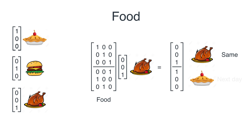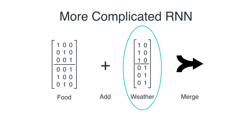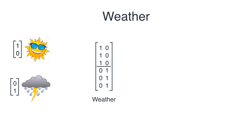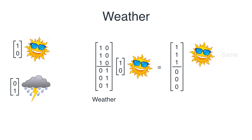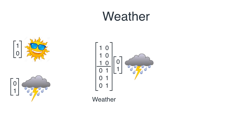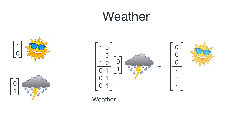So all the food matrix does is take your vector for today's food and return the vector for today's food and the vector for tomorrow's food, concatenated. Now let's look at the weather matrix. It's also a concatenation of matrices — the top matrix has three ones on the first row and the bottom matrix has three ones on the second row. If I multiply it by the sunny day vector, I get three ones on top and three zeros on the bottom. If I multiply it by the rainy day vector, I get zeros on top and ones on the bottom.